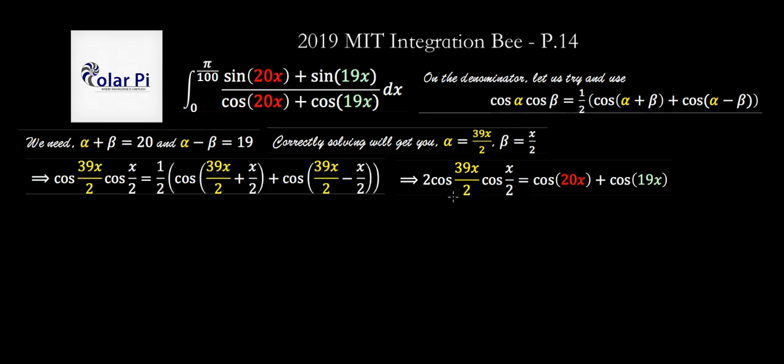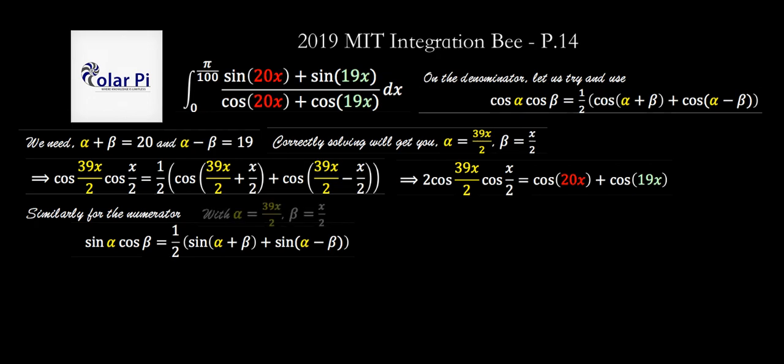And so we imagine we want to do similar to the numerator. So this time we use this equation, another product-to-sum formula, right? And again with alpha equaling 39 over 2x and beta equaling half x. And if we plug in, we get this.